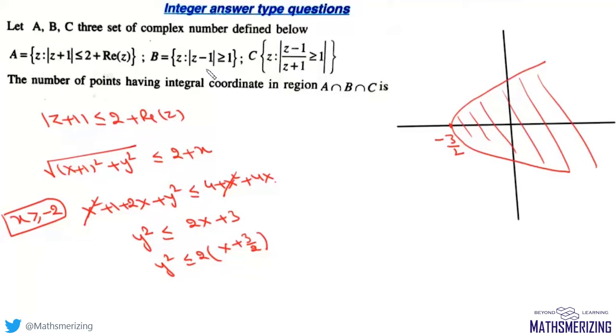The second locus is mod of z minus 1, which is greater than or equal to 1. We have this circle here, and all the points which lie outside this circle.